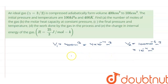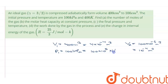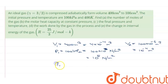Initial pressure and temperature are 100 kPa and 400 K. So P1 is equal to 100 kPa, which is 10⁵ N/m². And initial temperature T1 is equal to 400 K.